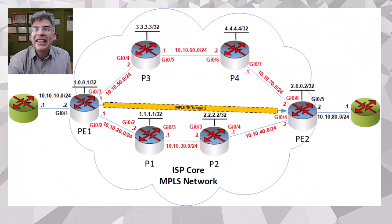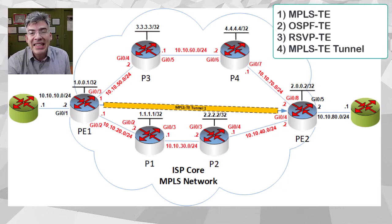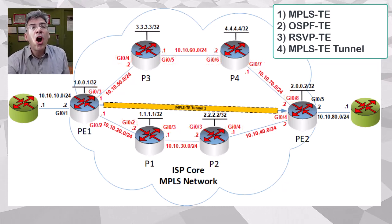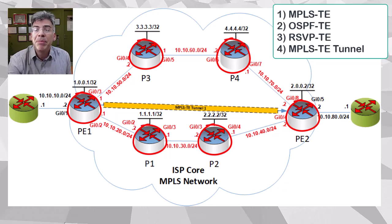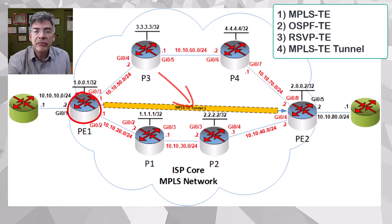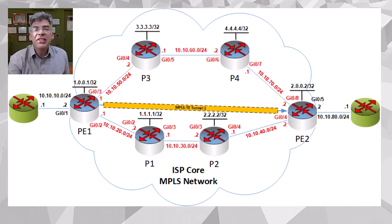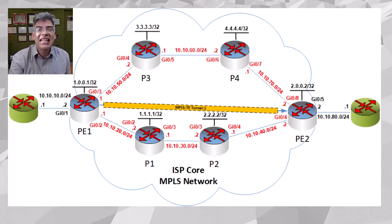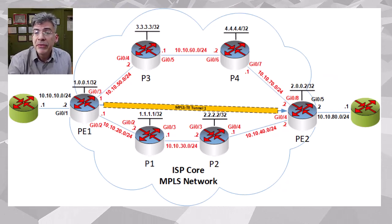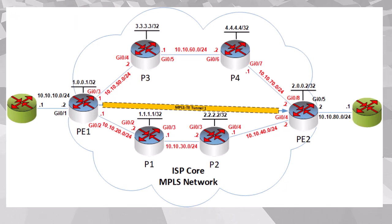In a couple of previous videos we took a look at the components required to deploy MPLS TE. These included enabling MPLS TE on all relevant interfaces, enabling OSPF TE on the MPLS topology, configuring RSVP TE on all our P and PE routers, and creating an MPLS TE tunnel on our ingress LSP router. Now in this video we'll be taking a closer look at the operation of RSVP TE — what kinds of messages are exchanged between RSVP TE routers, and how do they reserve and free up resources when a tunnel is created or torn down, and how does RSVP interact with the underlying IGP.